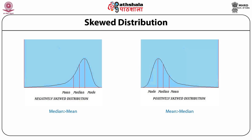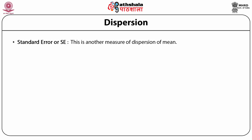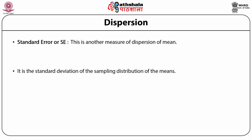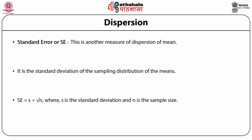The diagram shows a negatively skewed distribution, and the next diagram shows a positively skewed distribution. Standard error (SE) is another measure of dispersion of the mean. It is the standard deviation of the sampling distribution of the mean. The formula for standard error is: SE = s / √n, where s is the standard deviation and n is the sample size.